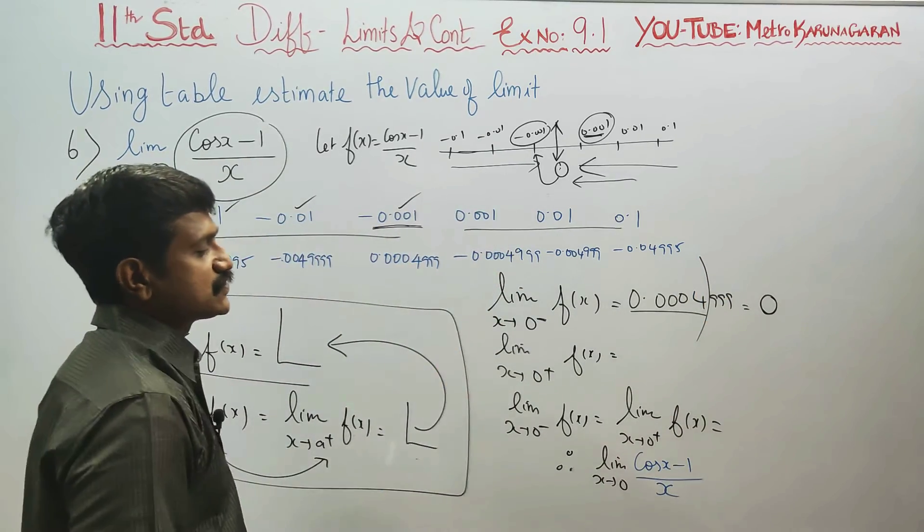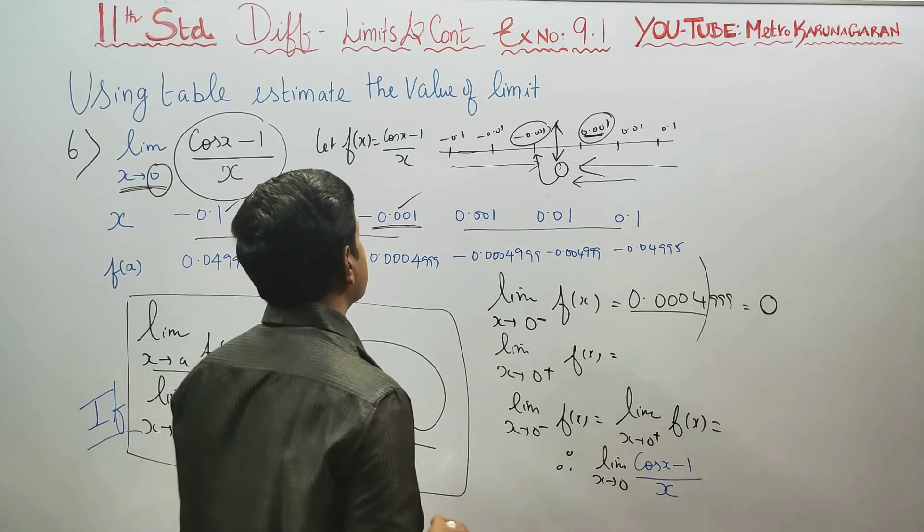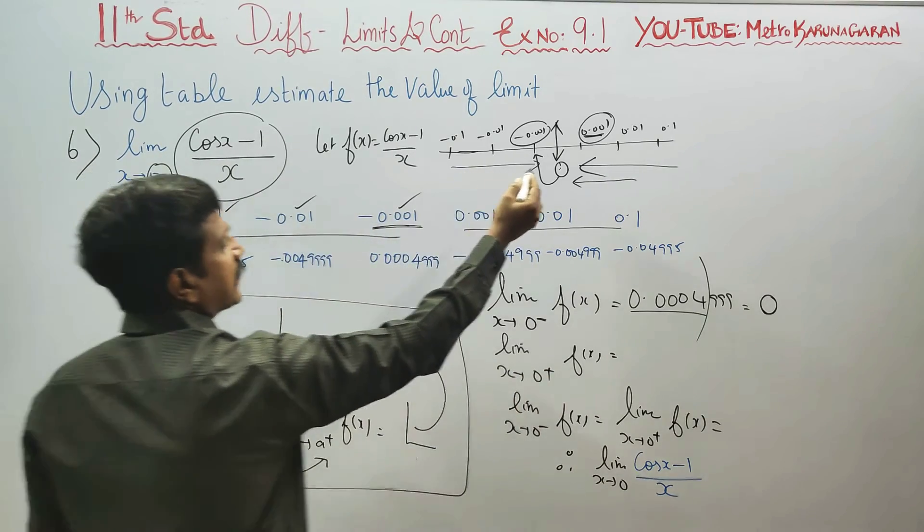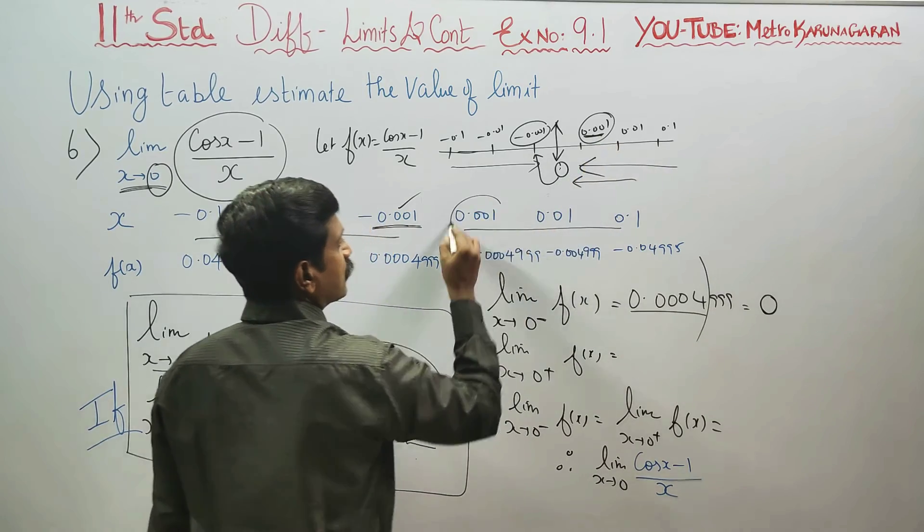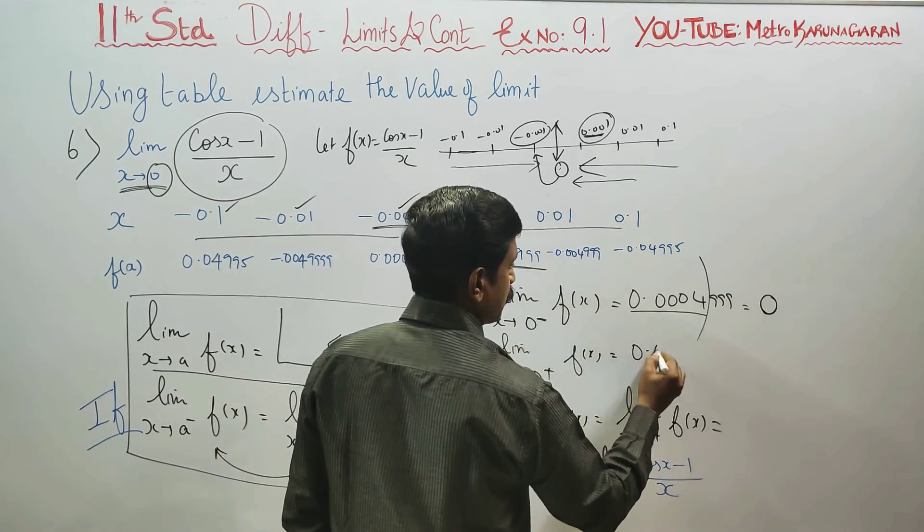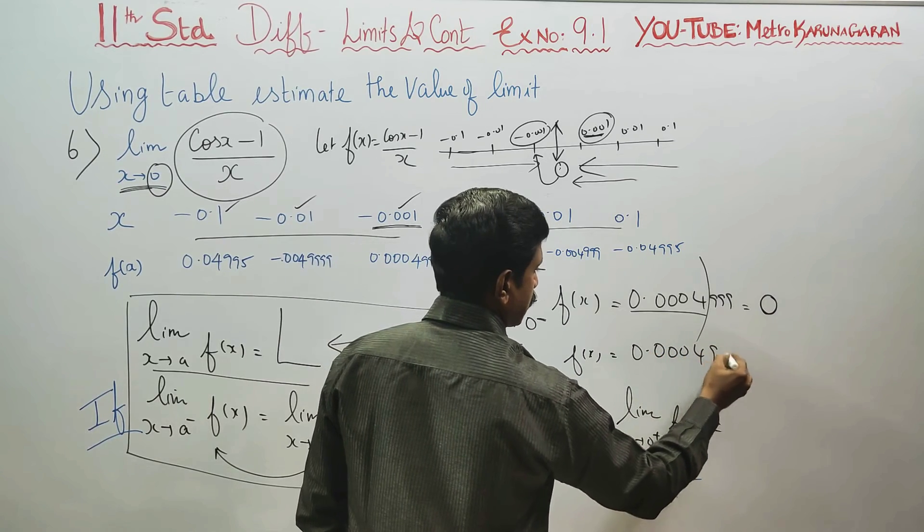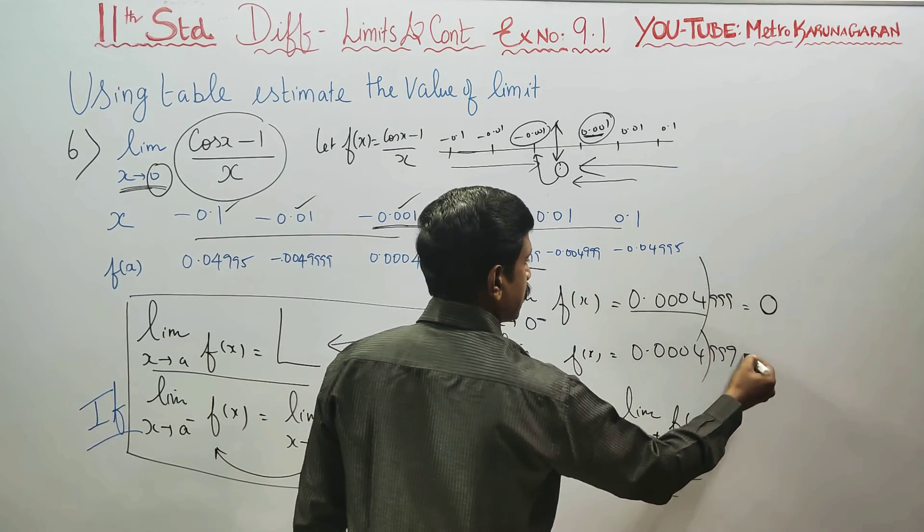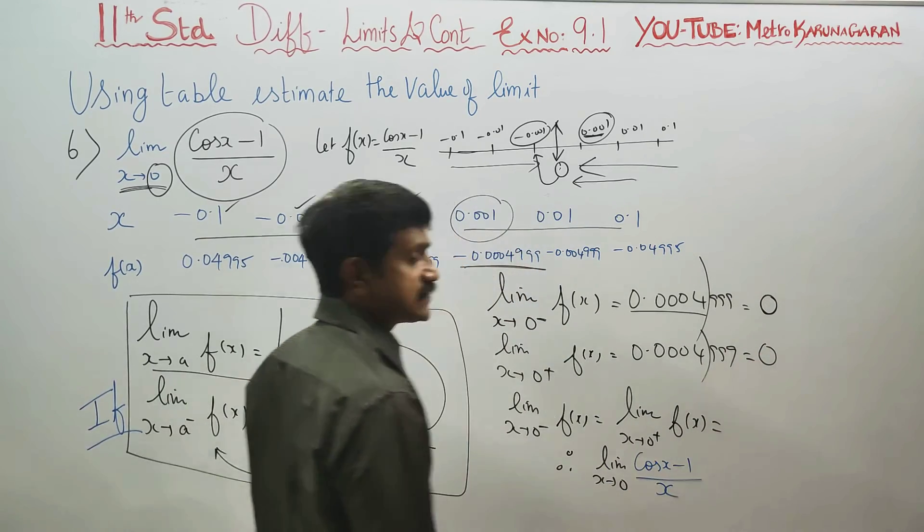When x turns to 0 plus, f of x from the positive side or right hand direction at 0.001, this is the close value. If you calculate, the answer is the same: 0.00004999. The approximate value is 0.